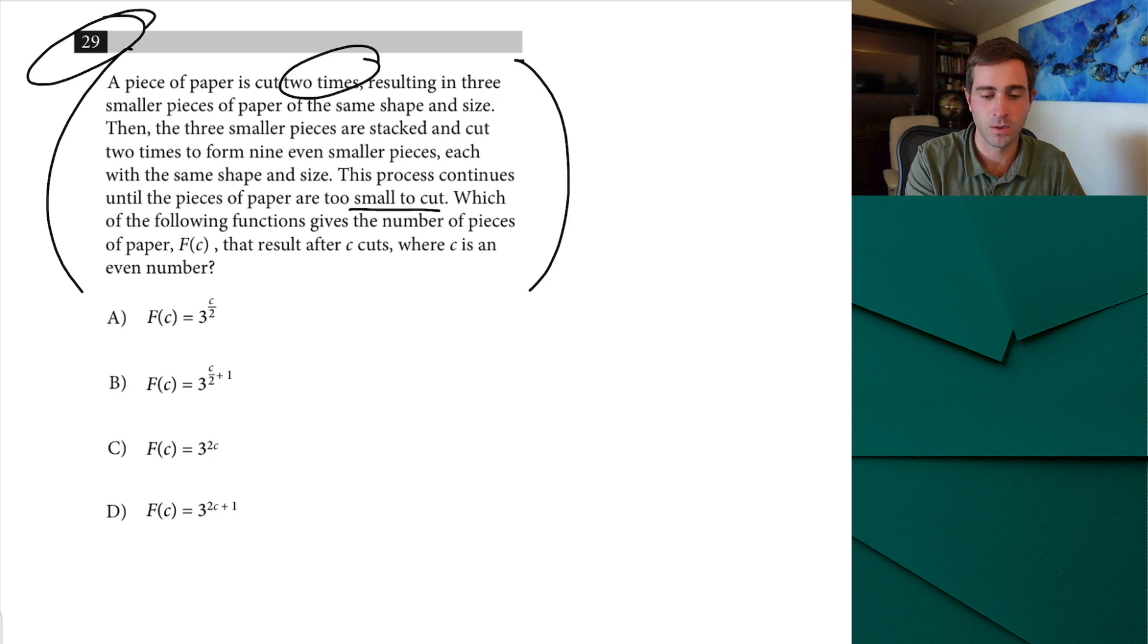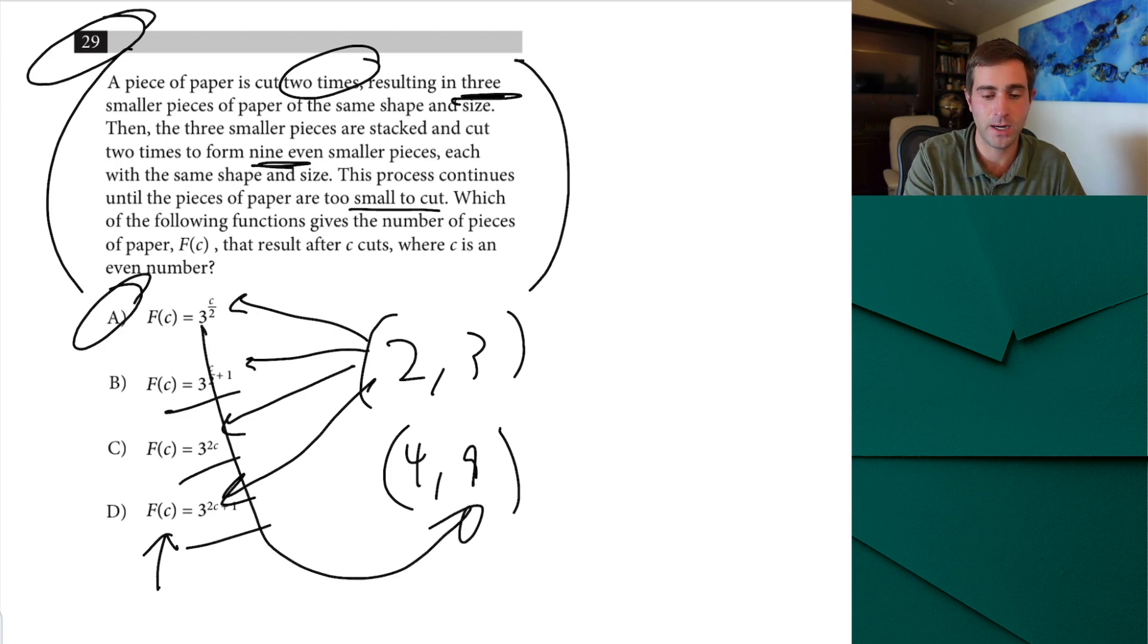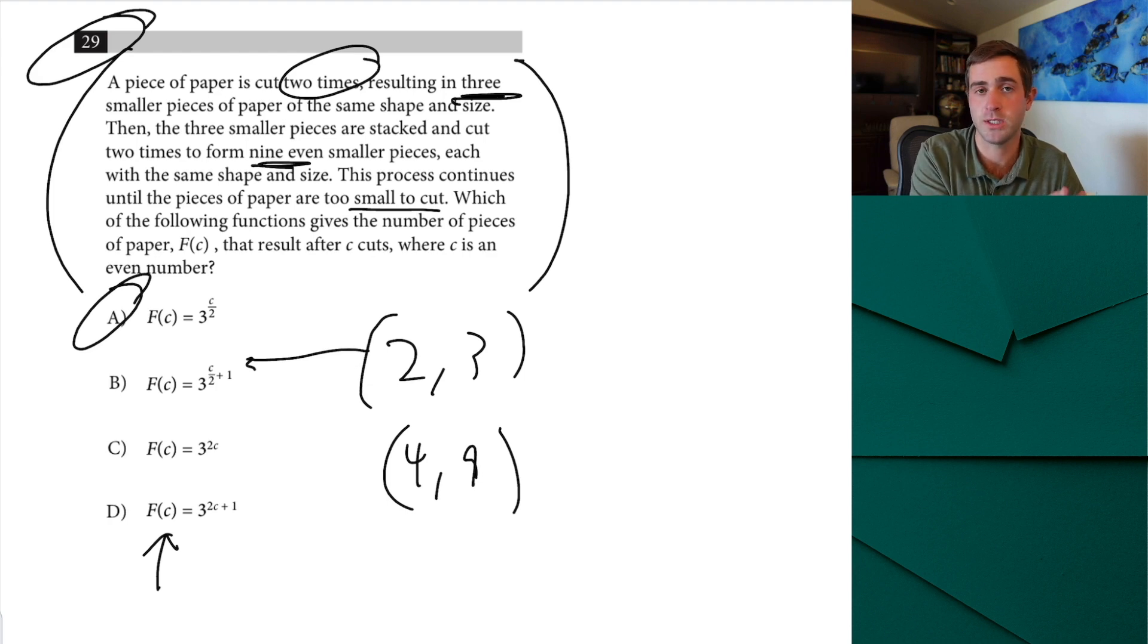Looks like a doozy but all we want to do is we want to try to pull out some points. Well we know if we cut it twice we should get three. If we cut it four times we should get nine. So I would pull out the points two comma three and four comma nine. Now sometimes you have to use multiple points. Sometimes you can just plug one in to find the right answer. But what we know is if we plug two in for c the correct answer is going to have to give us an output of three. And the only one that that works for is a. And we could also check the second point. Well three to the four over two is the same as three squared. And yes three squared equals nine. None of these other answer choices work out at all. You can plug those points in to check.